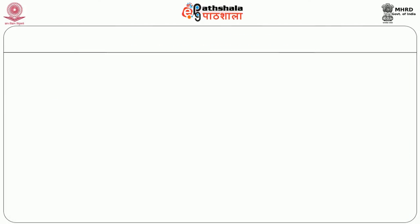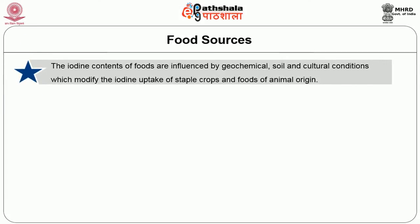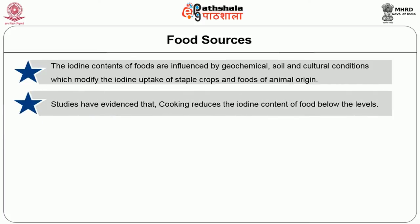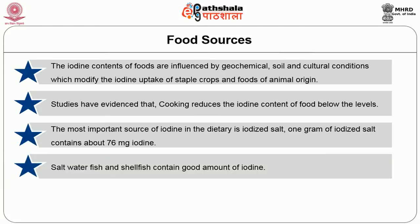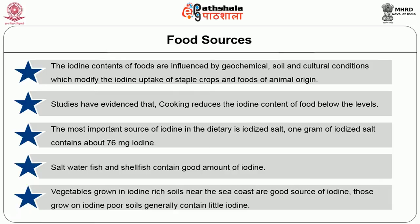Let us identify some of the food sources of iodine. The iodine content of foods is influenced by geochemical, soil and cultural conditions, which modify the iodine uptake of staple crops and foods of animal origin. The most important source of iodine in the diet is iodized salt; 1 gram of iodized salt contains about 76 micrograms of iodine. Salt water fish and shellfish contain a good amount of iodine. Vegetables grown in iodine-rich soils near the seacoast are good sources, while those grown on iodine-poor soils generally contain little iodine.